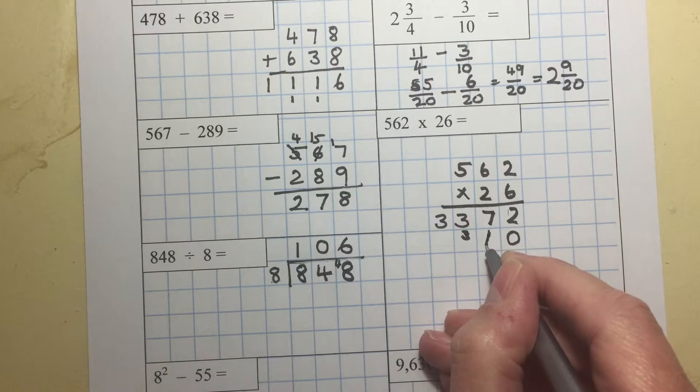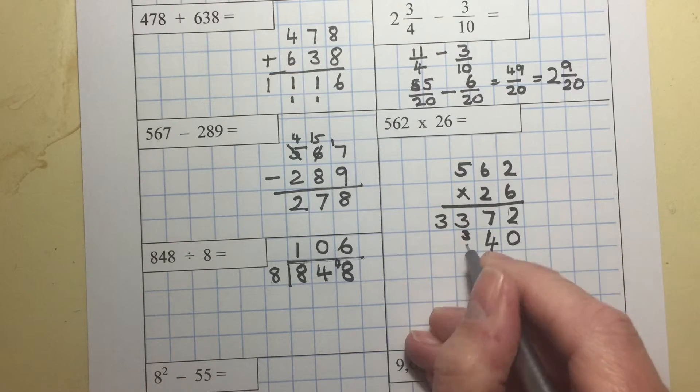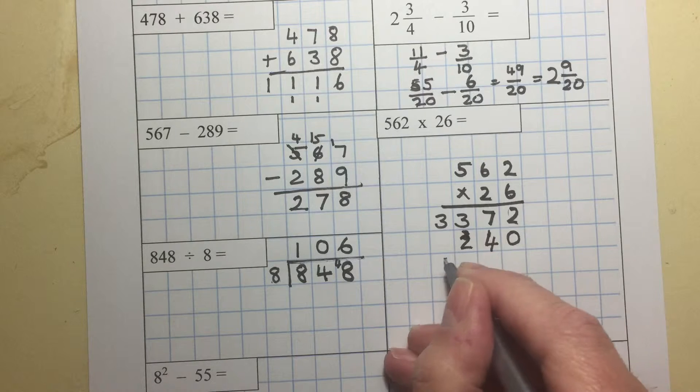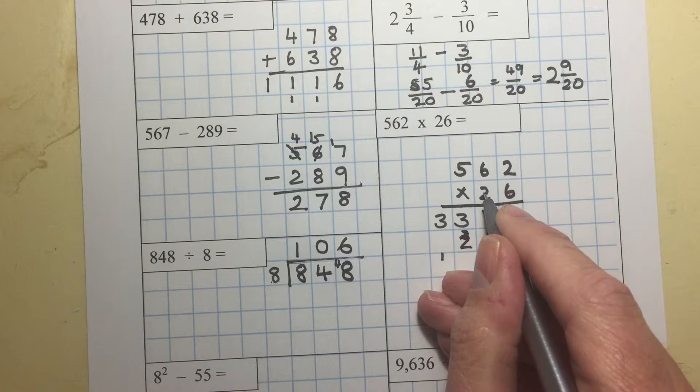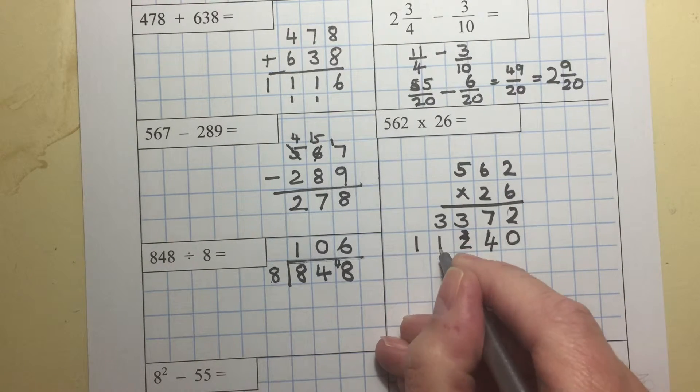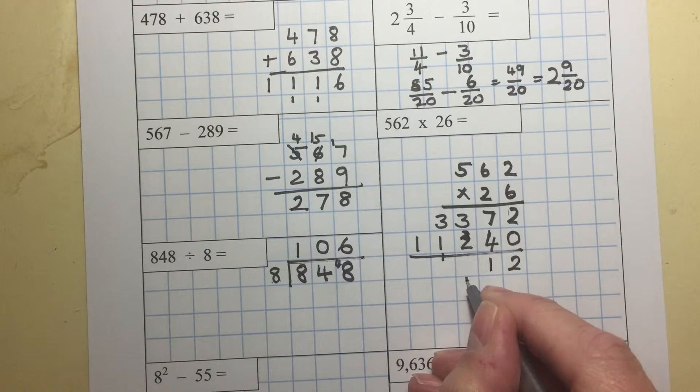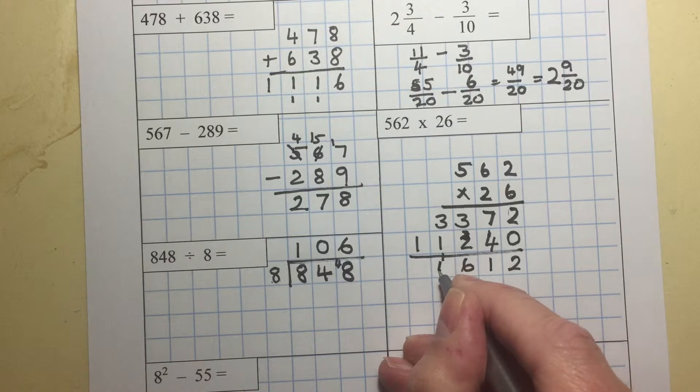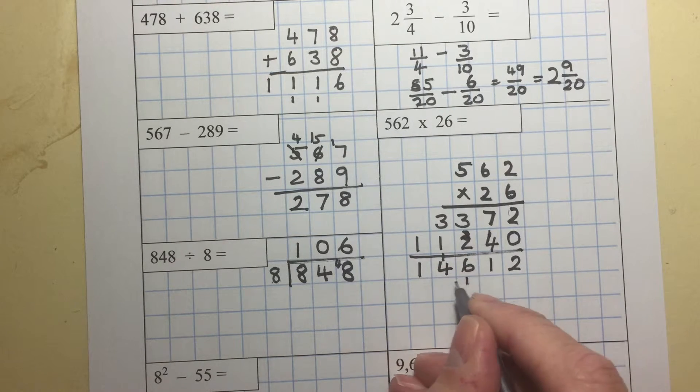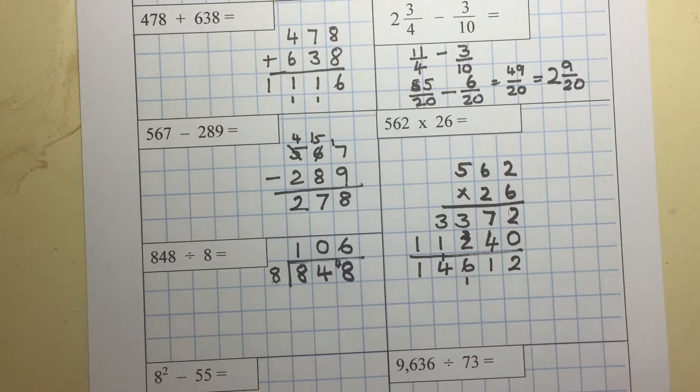2 times 2 is 4. 2 times 6 is 12, put down 2 carry 1. 2 times 5 is 10, plus 1 is 11. Add it all up. 14,612.